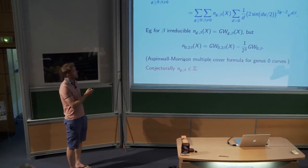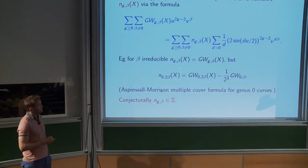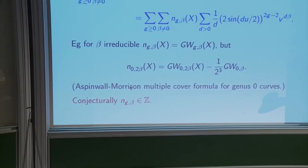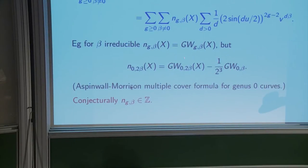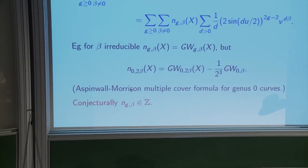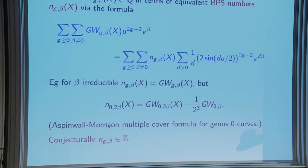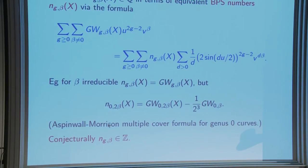The philosophy is that underlying these rational numbers are some integers. In an irreducible class, to leading order the BPS numbers are the Gromov-Witten invariants — there's no room for multiple covers or degenerate contributions. To next order, once you double the class in genus zero, you count curves in class 2β and subtract the contribution from those in class β which have been multiply covered, given by the Aspinwall-Morrison multiple cover formula. This is the prediction, and these BPS numbers are conjecturally integers — indeed they are in all cases computed.